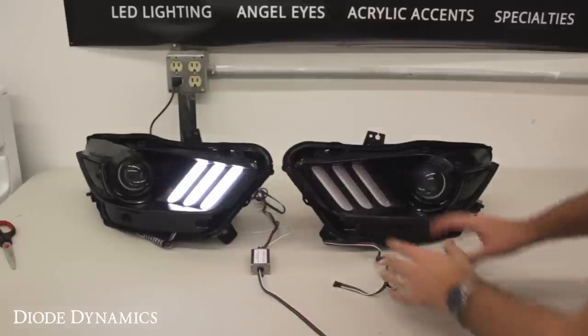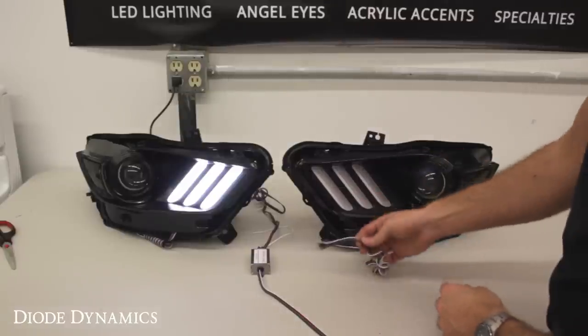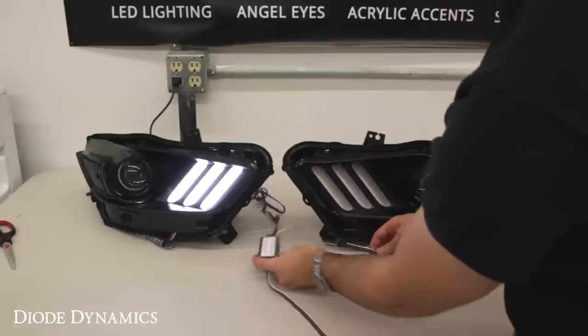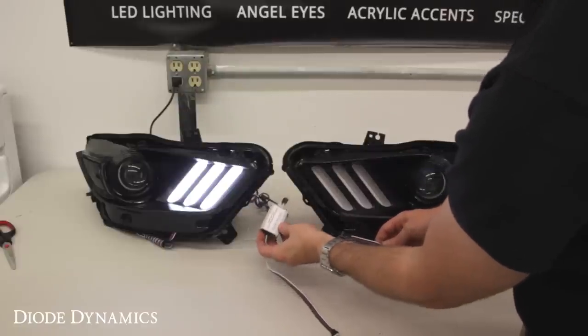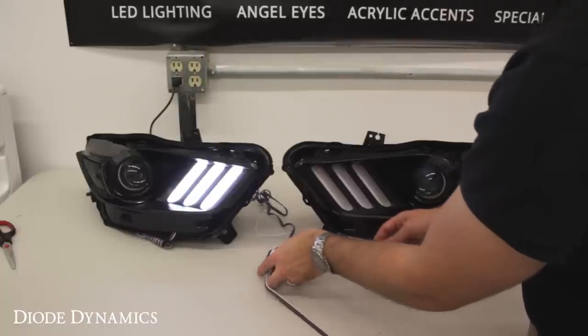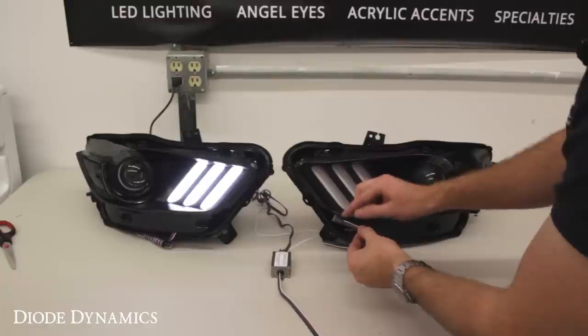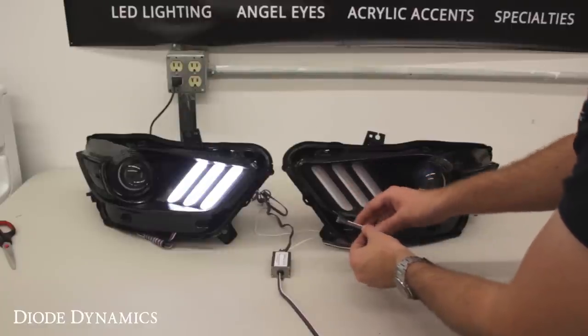That completes installation. But before resealing the light, you'll want to make sure to test everything out. Now, Diode Dynamics products almost always use an external regulator, which allows for high reliability. That means you have to use this driver or regulator. You cannot plug this directly into your controller.